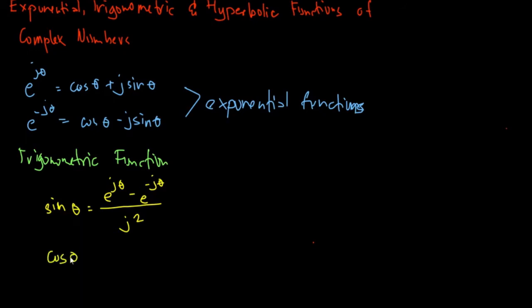Then cosine theta, it is similar to our sine, except that the sign of our functions is different. Usually the sign is the negative of our cosine. So we have plus e negative j theta all over 2.